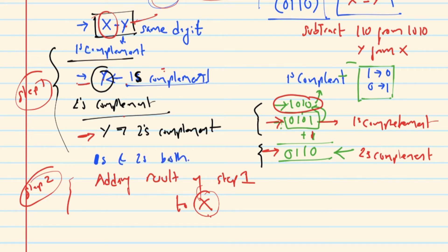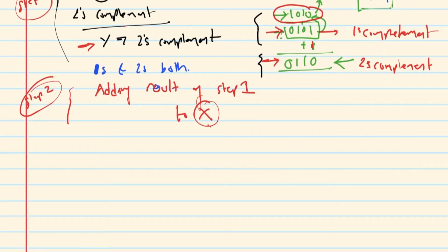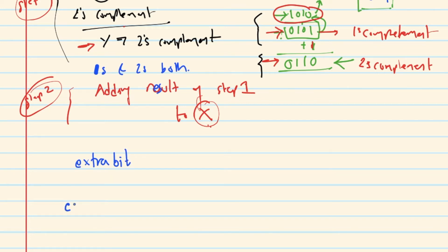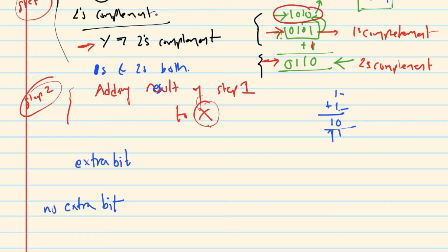What happens when you add is the most important part. How do you explain the result? If there is no extra bit — what is an extra bit? Suppose 1 plus 1 in binary gives a carry digit. That extra carry digit is what we call the extra bit.